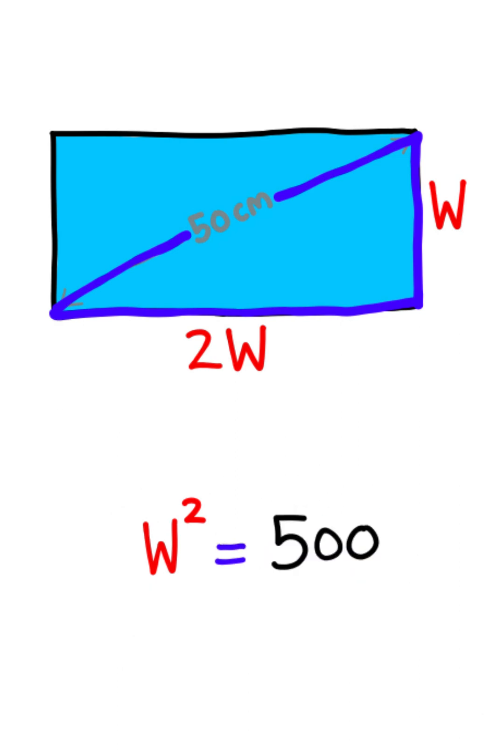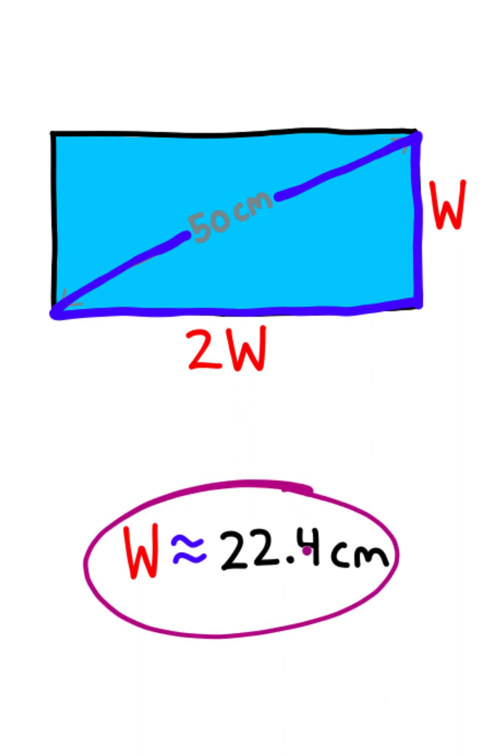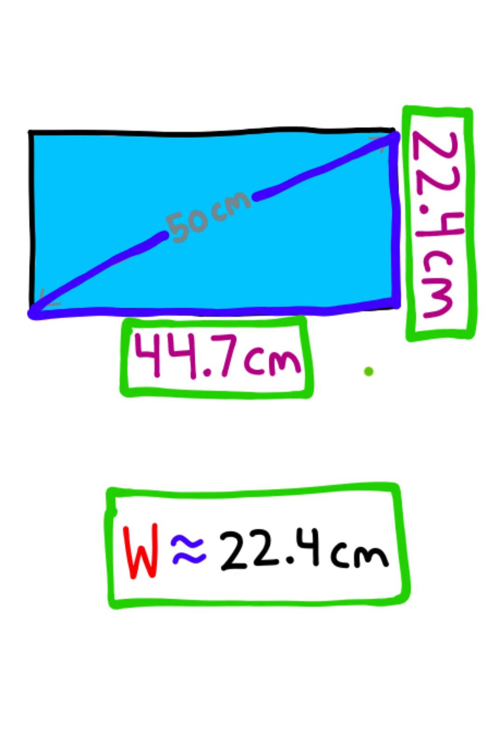And all I need to do from here is take the square root. If I ignore the negative value, the square root of 500 comes out to approximately 22.4 centimeters. So this is the approximate width, and plugging 22.4 in for w gives me the missing dimensions of this window.